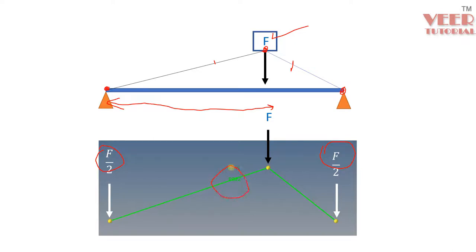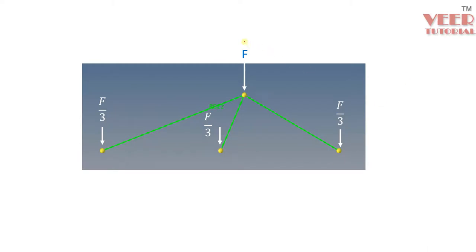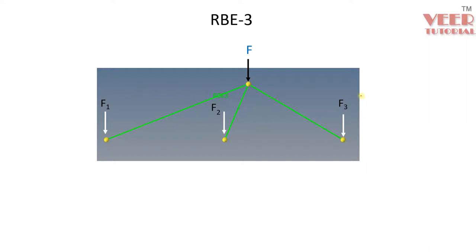This equal distribution is the behavior of the RB2 or KinCoup element. For example, when three nodes are connected, the force is distributed as F/3, F/3, F/3 across all three nodes. However, in the RB3 element, the force distribution is not equal — it depends on displacement values, or generally a weightage factor is specified, resulting in forces F1, F2, F3 at each node.